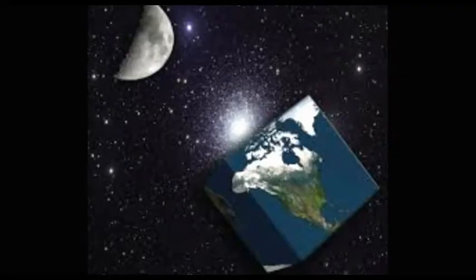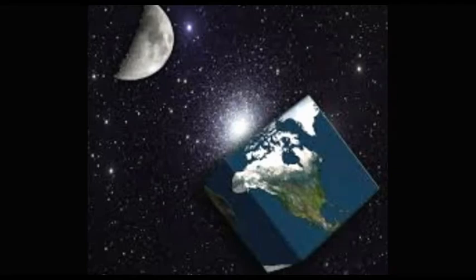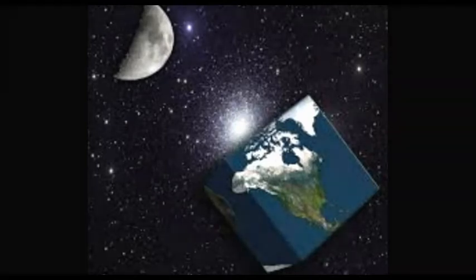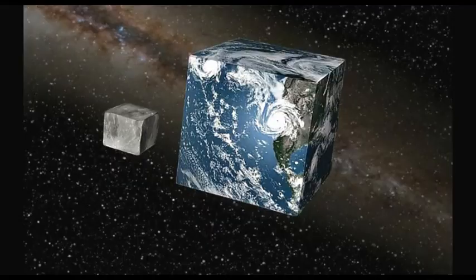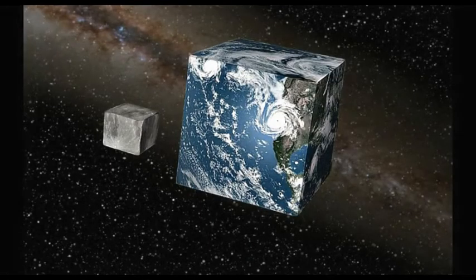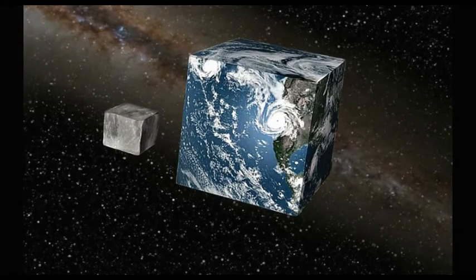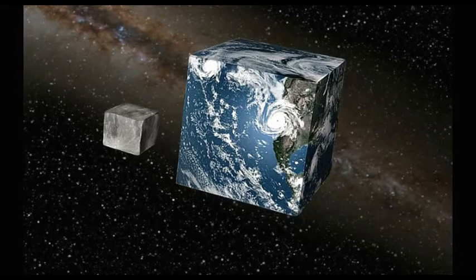If a planet were, say, a cube, its corners would be farther from the center than everything else. Because of gravity, these corners would collapse inward to get closer to the center.